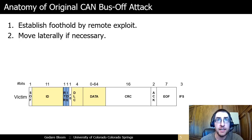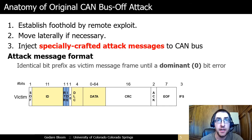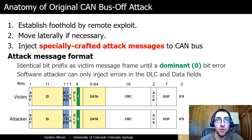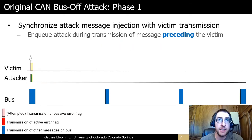The original bus-off attack uses the fault confinement protocol to cause a victim controller to go to the bus-off state. The attack uses an injected message that has identical bits as the message transmitted by the victim until one bit in the frame where the victim sends a recessive bit and the attacker sends a dominant bit. The only fields that a software-based attacker can cause the bit error to occur in are the DLC and data fields. The attacker also controls the ID field, but the ID needs to match the victim's in order for the attack to work. The other fields are fixed format or implemented by the hardware CAN controller.